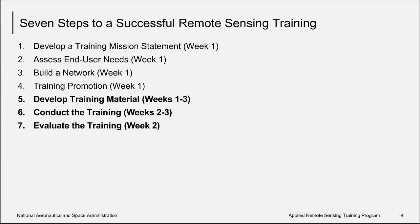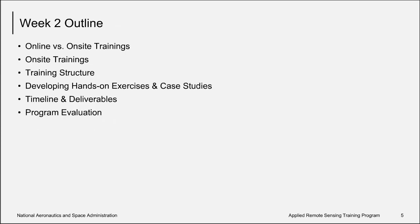Next week we will discuss the three steps again — five, six, and seven — but as they relate to online training. Today's topics in more detail include the differences between online and on-site training, on-site training structure, how to develop case studies and hands-on exercises, timelines and deliverables for on-site training, and finally program evaluation.